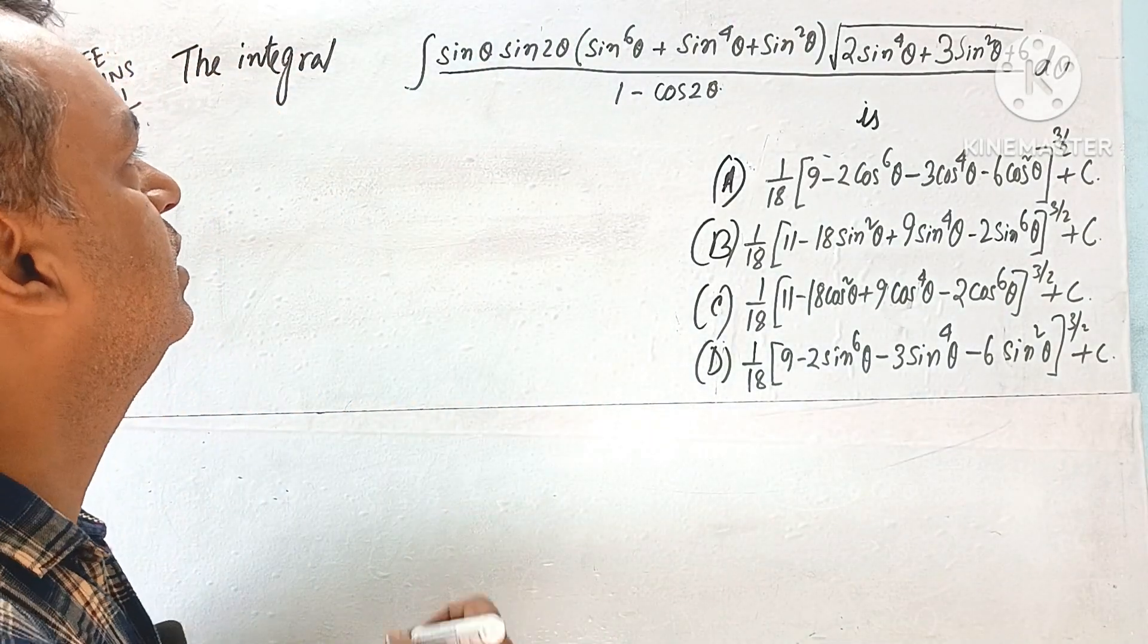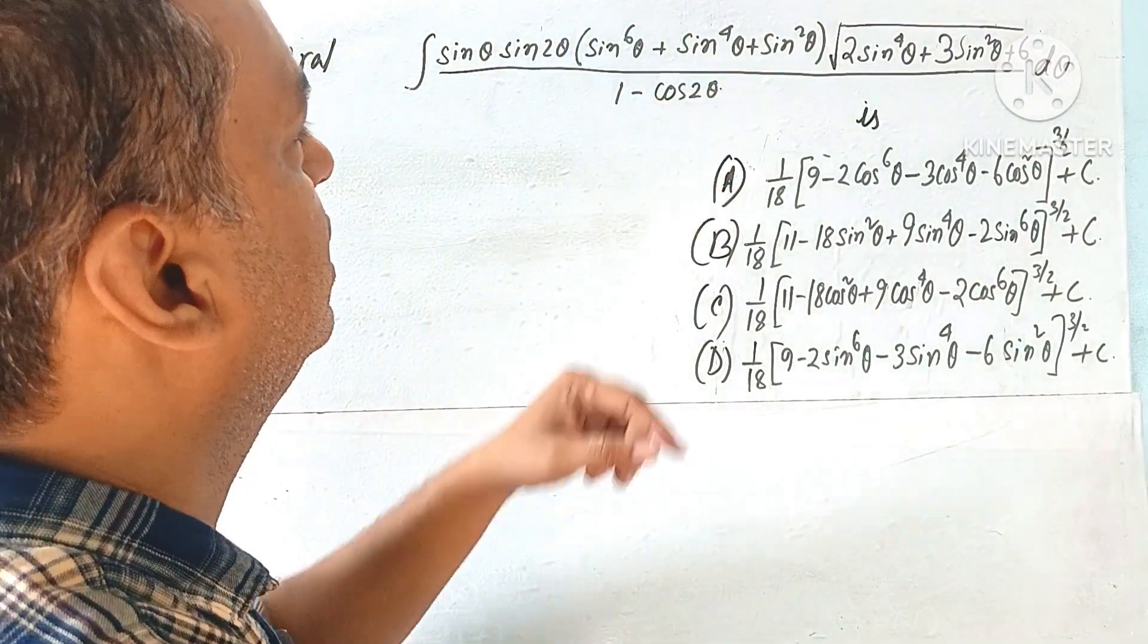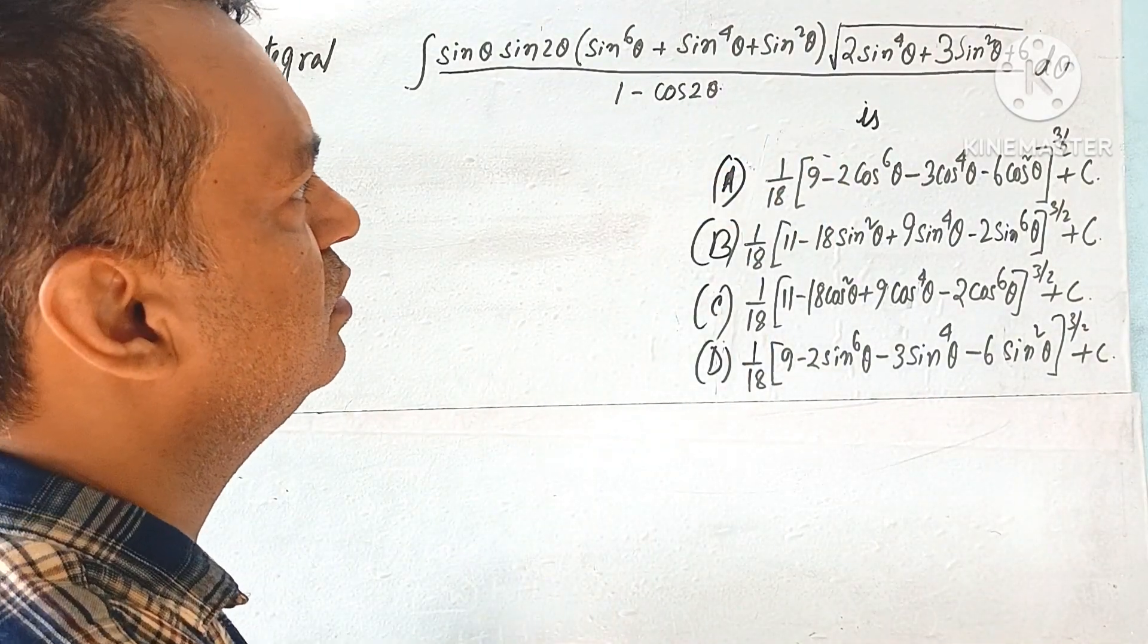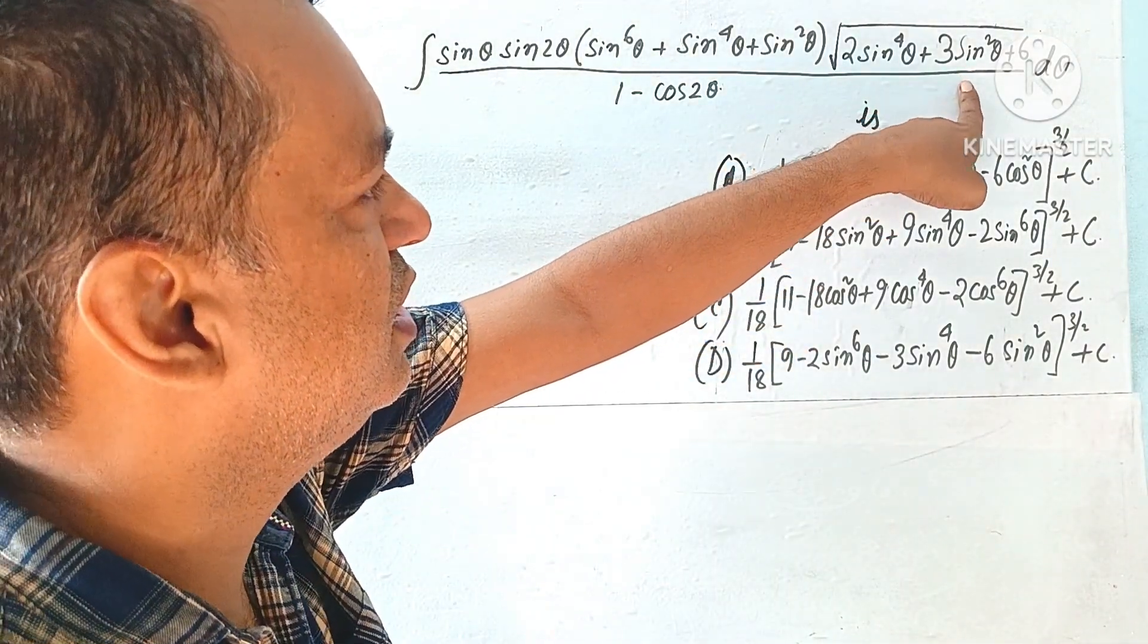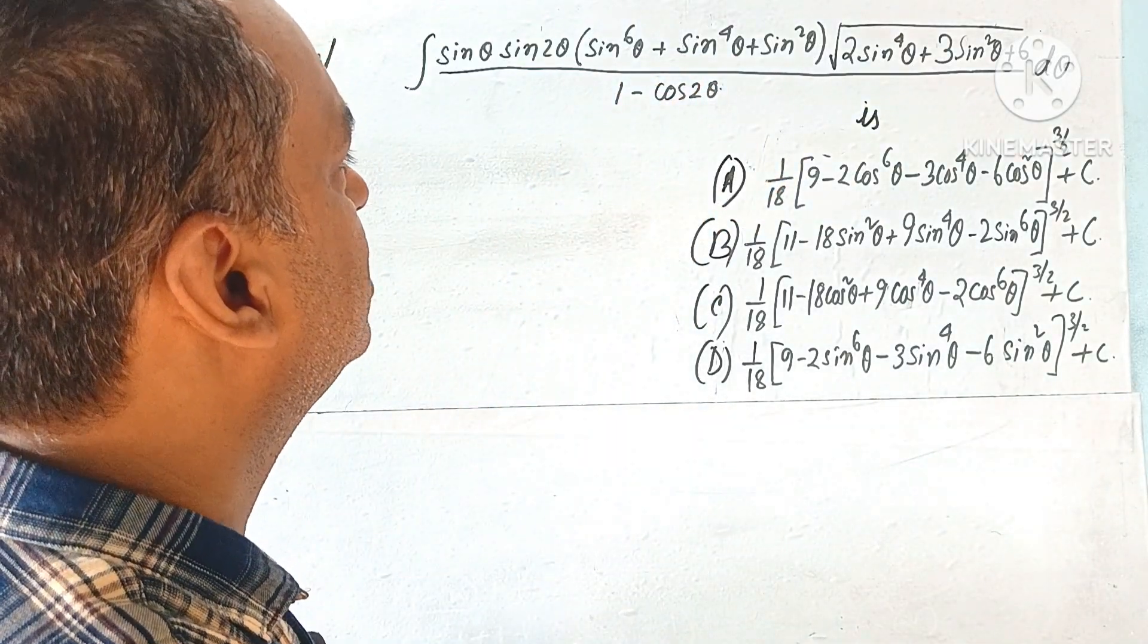The problem is sin θ sin 2θ, sin to the power 6θ plus sin to the power 4θ plus sin square θ, all into square root of 2 sin to the power 4θ, 3 sin square θ plus 6, divided by 1 minus cos θ.